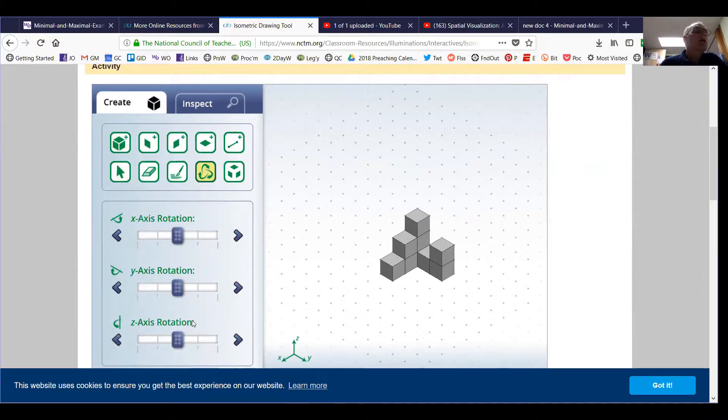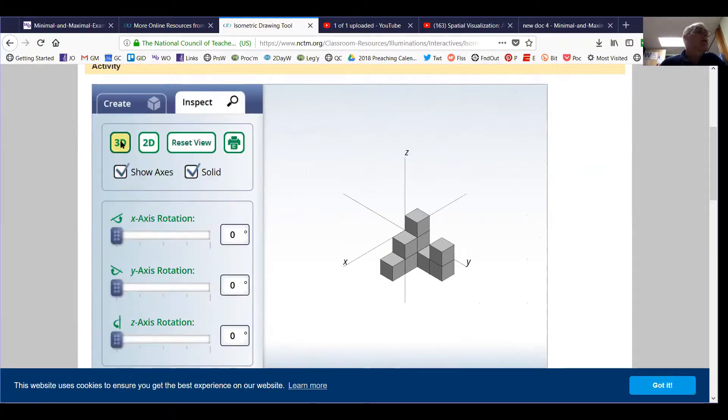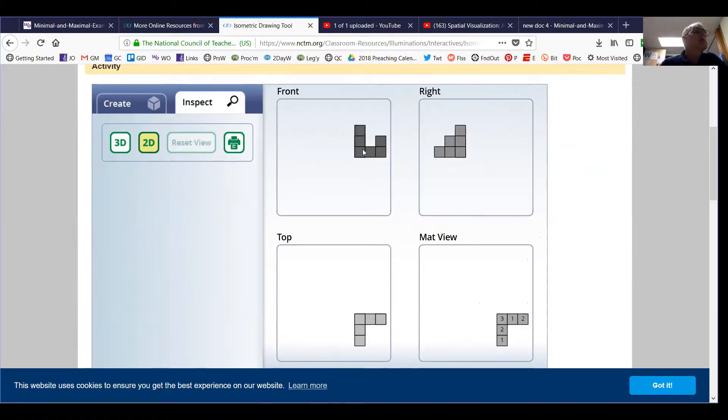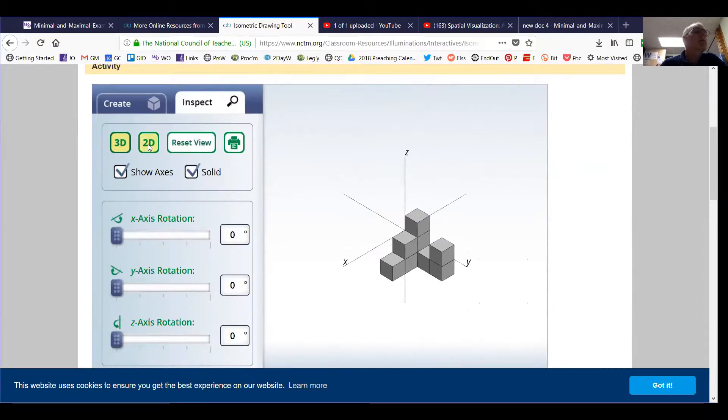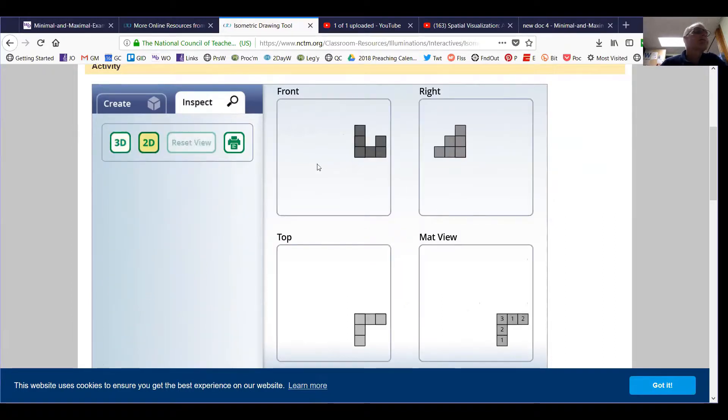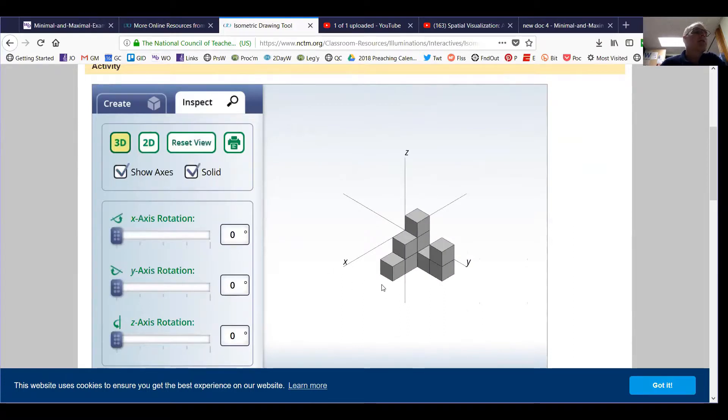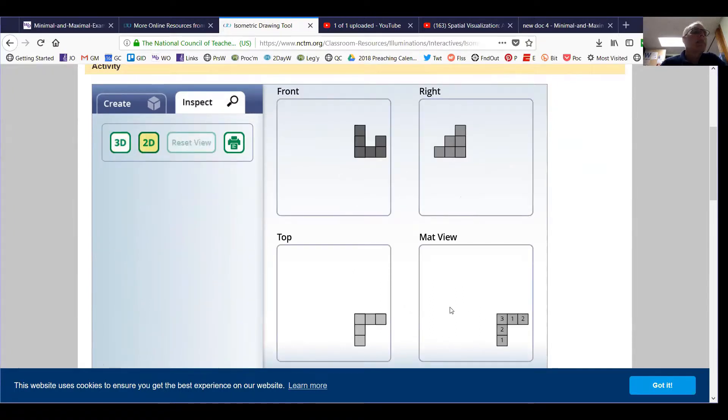We can also look at the three views and the map plan by hitting this inspect tab. If I switch to the 2d view, the front view looks like this kind of a u-shape, the right-hand view looks like stair steps, the top view is coming from the front and flying up on top like a helicopter, looks like an L, and the map plan looks just like the top view or the base view but with the numbers put in there: three high, two high, one, one, and two high.